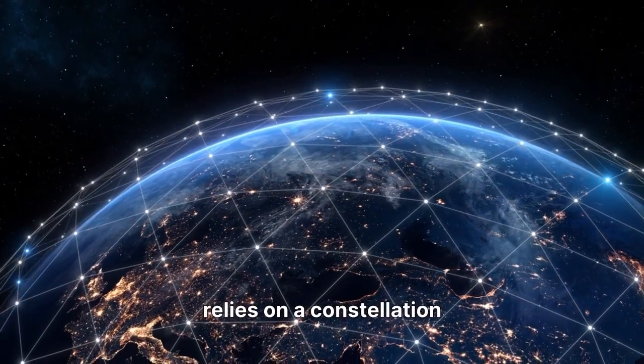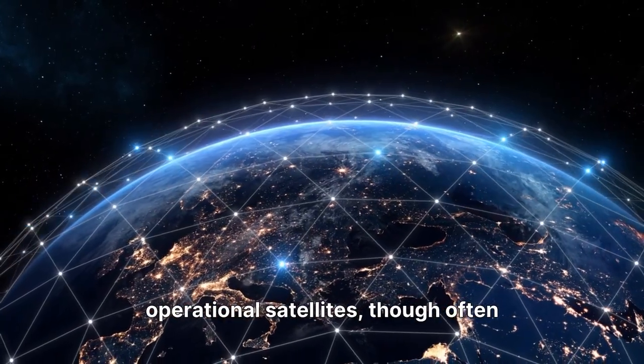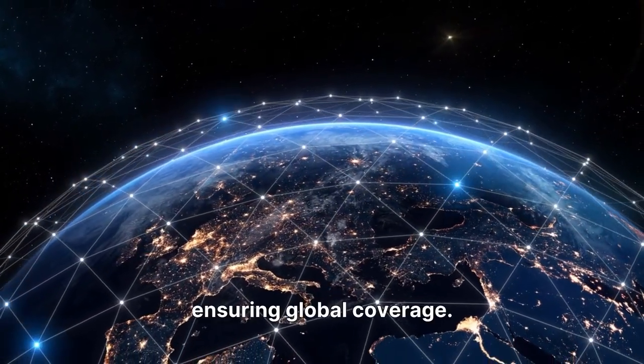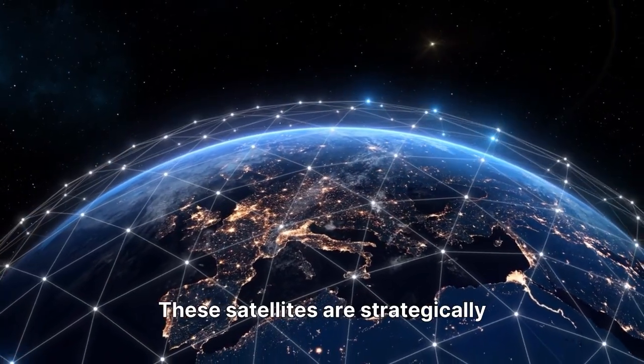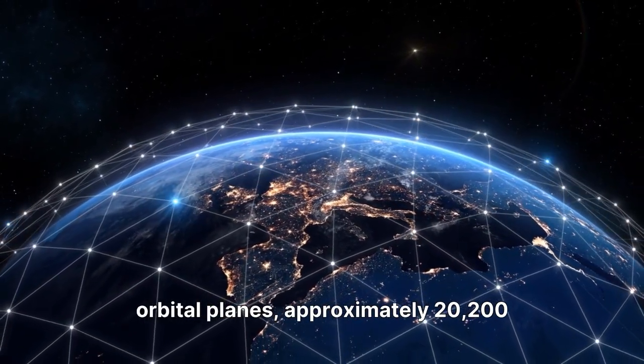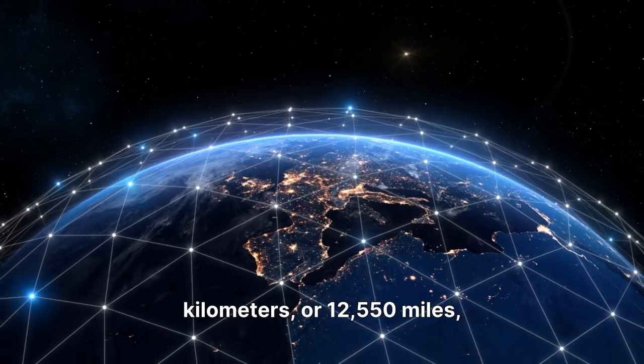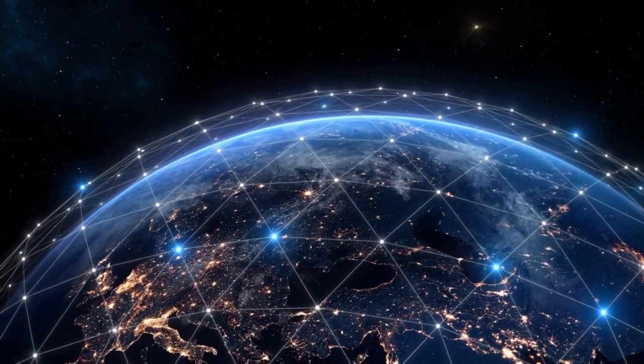At its core, GPS relies on a constellation of at least 24 operational satellites, though often more are in orbit, ensuring global coverage. These satellites are strategically placed in six different orbital planes, approximately 20,200 kilometers, or 12,550 miles, above the Earth.